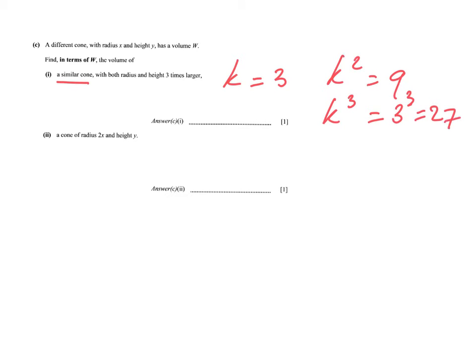So three to the power of three, which is 27. So the volume of this similar cone, with a radius and height three times larger, is going to be 27 times larger than the original cone. That volume was w, so this volume will be 27 times w. Okay, there we go. Second question.